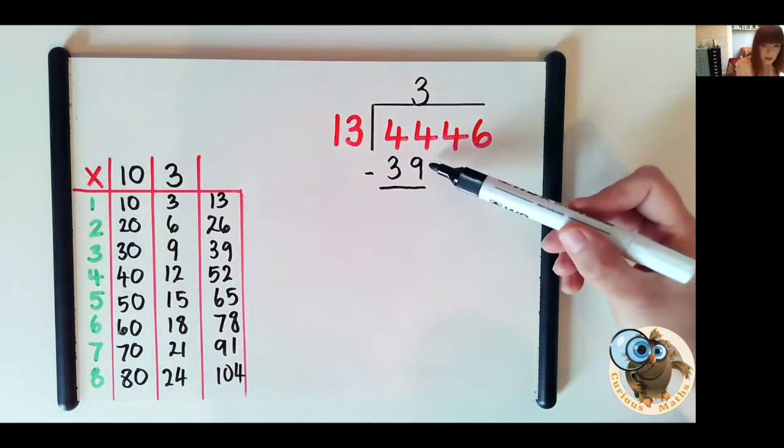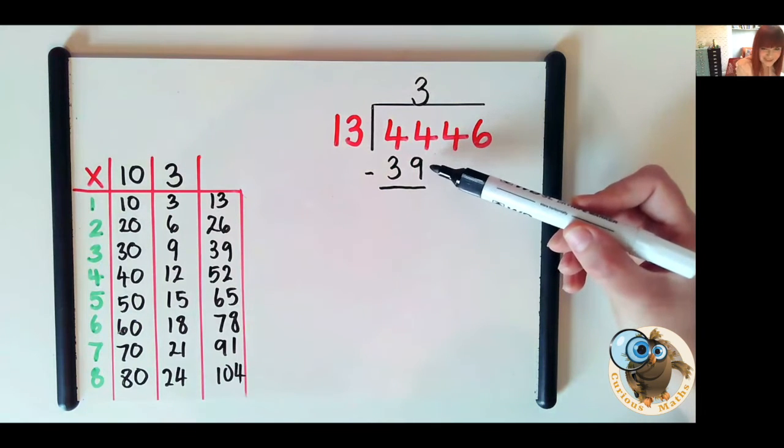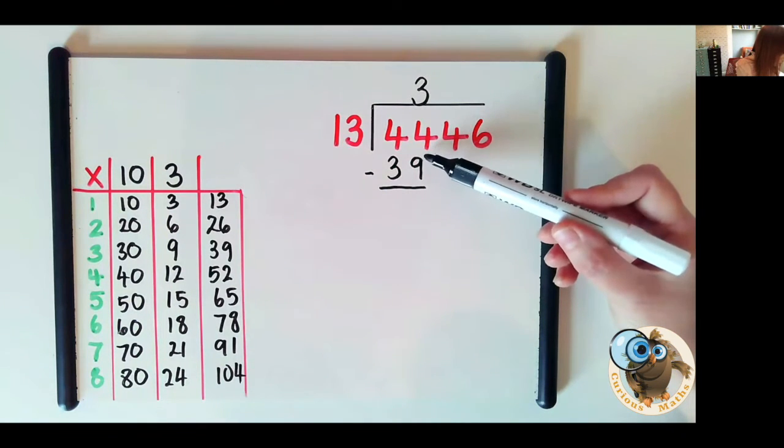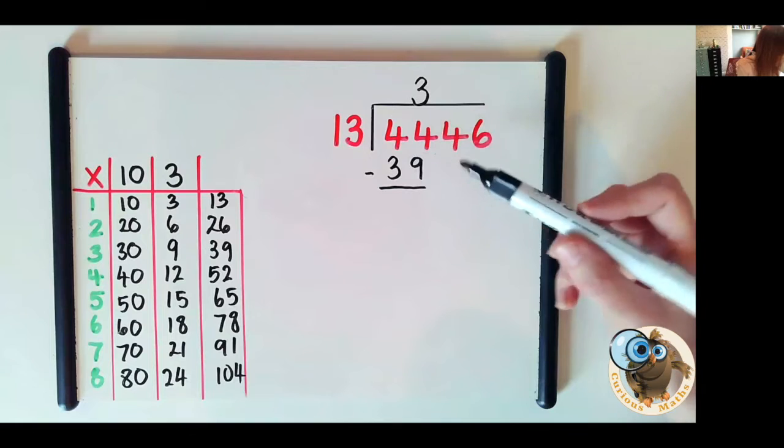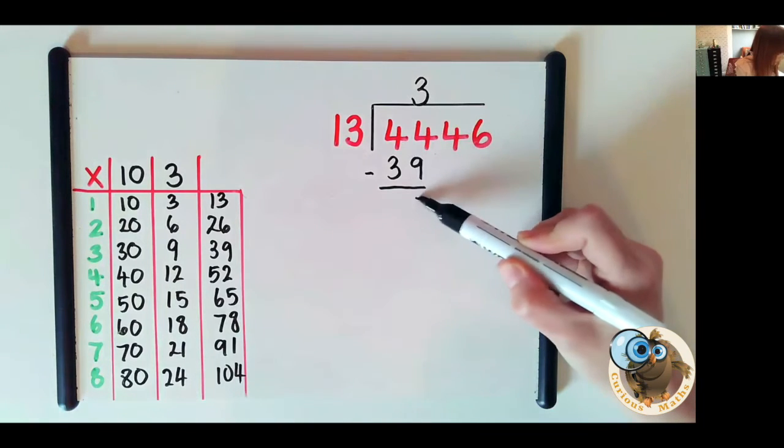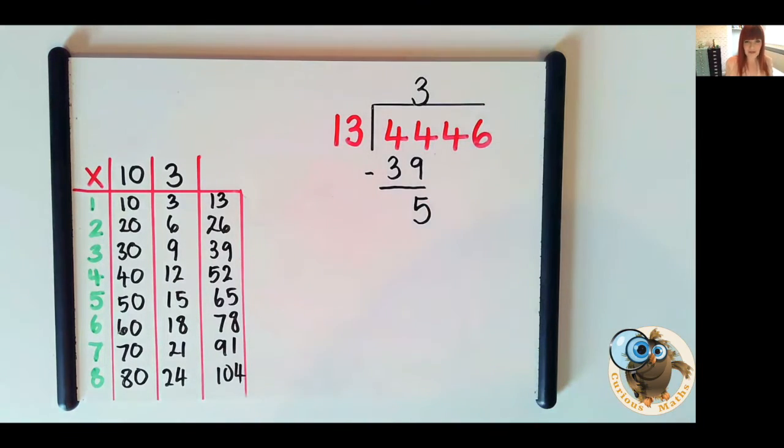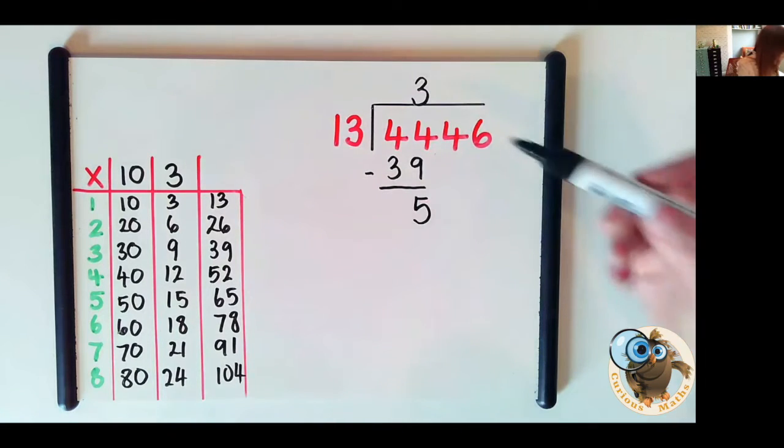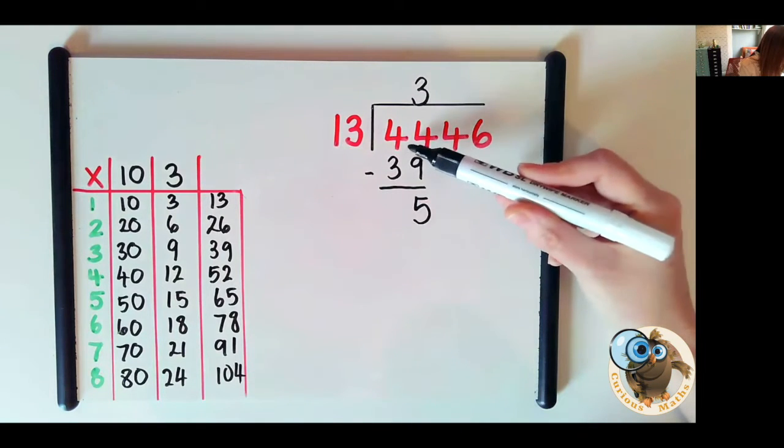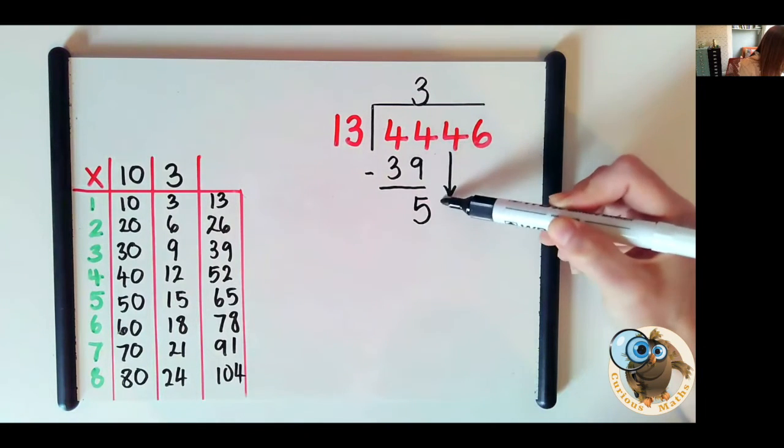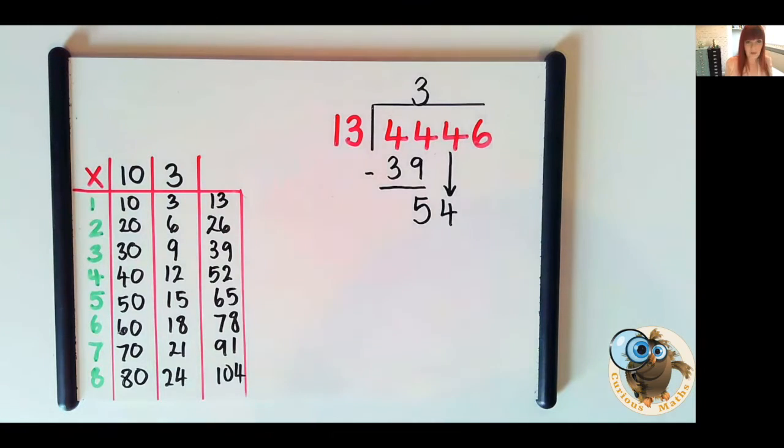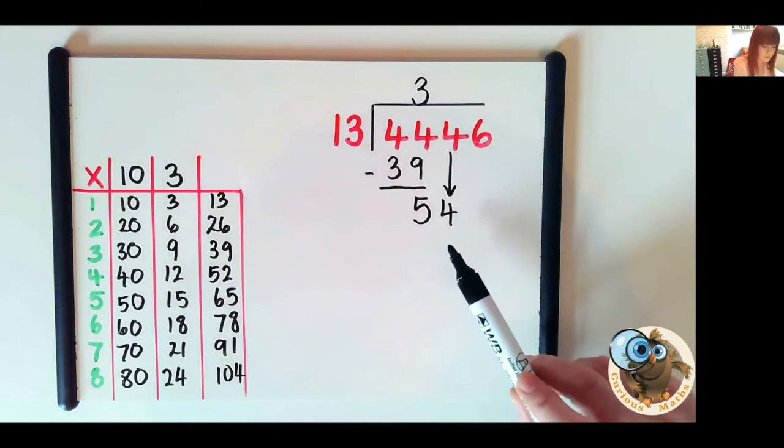So we could use column subtraction, it's set up for that, but actually I like children to say 44 take away 39, well that's going to be 5 rather than having to calculate. So now we bring the next number down. So we've used these two, let's bring that 4 down.